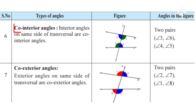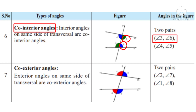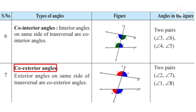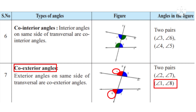Number 6: co-interior angles — the angles which lie on the same side of the transversal but they are inside angles. One pair is angle 3 and angle 6; another pair is angle 4 and angle 5. Number 7: co-exterior angles — they lie on the same side of the transversal but they are outside angles. One pair is angle 2 and angle 7; another pair is angle 1 and angle 8.